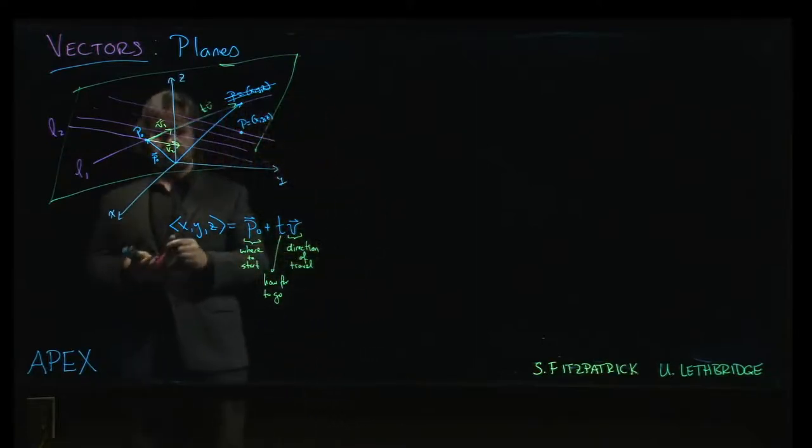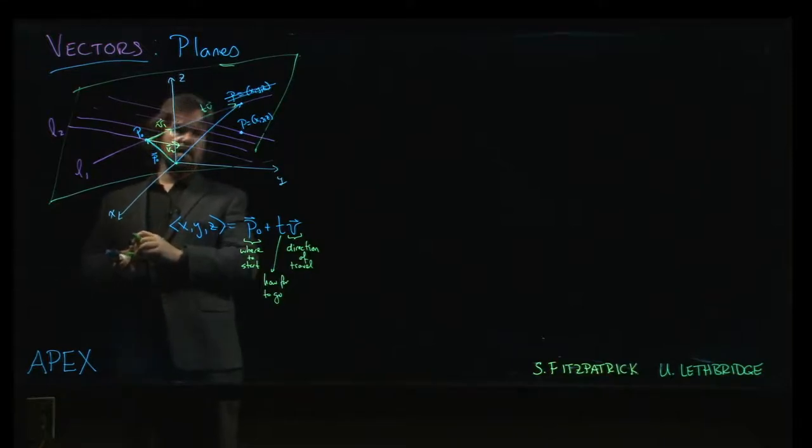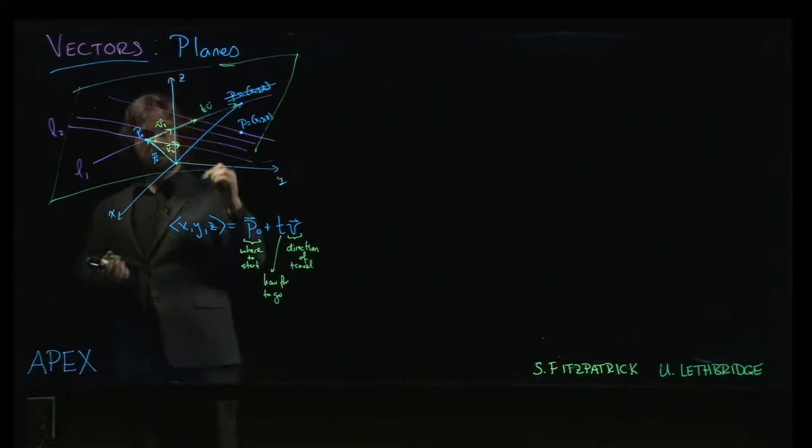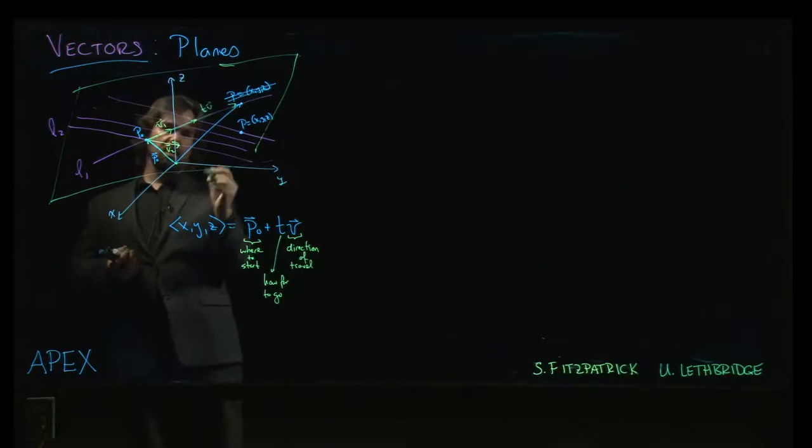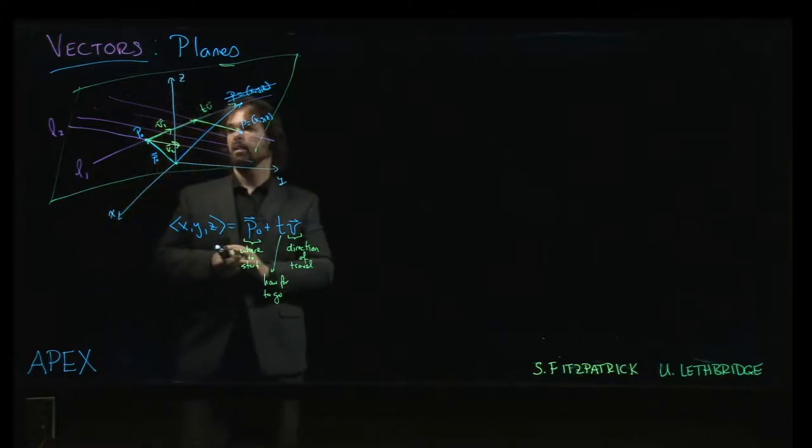I have all these lines parallel to L2. And, oh, look. There's one that happens to pass through that point p. So, one way to think about what we do here is we kind of go through the same process. We start at the origin. Next, we are going to move along L1 in the direction of v1 until we get to this point here.